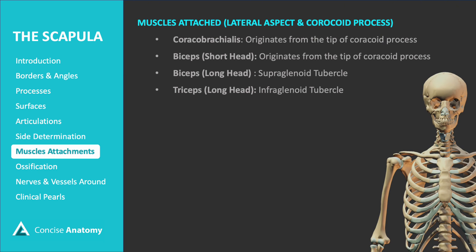Looking at muscles attached to the lateral aspect of the scapula and the coracoid process: the coracobrachialis muscle originates from the tip of the coracoid process and inserts onto the medial surface of the humerus. The short head of the biceps also originates from the tip of the coracoid process, along with the coracobrachialis. The long head of the biceps brachii originates from the supraglenoid tubercle of the scapula and plays a key role in flexing the elbow and supinating the forearm. The long head of the triceps originates from the infraglenoid tubercle of the scapula.